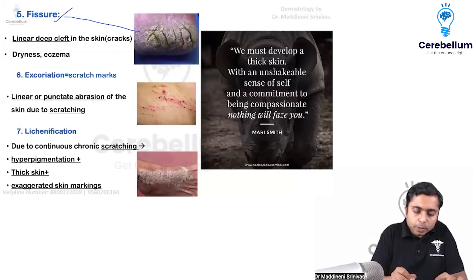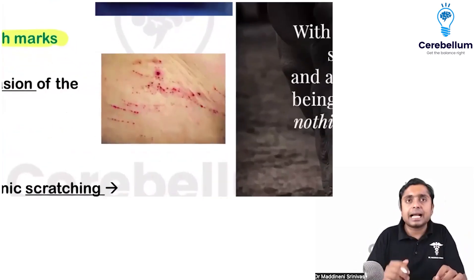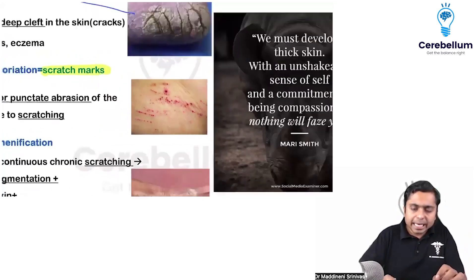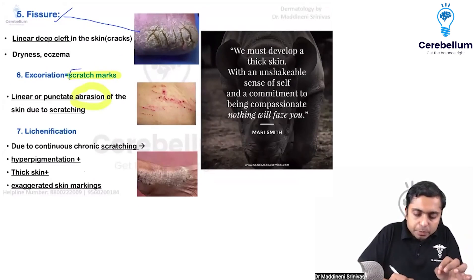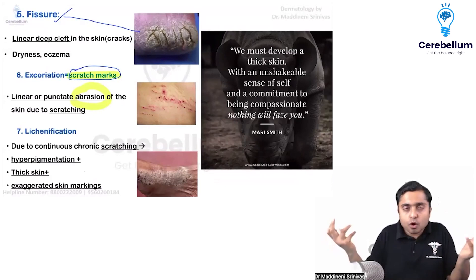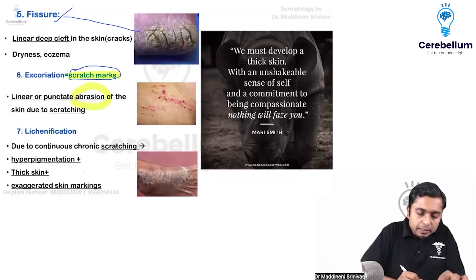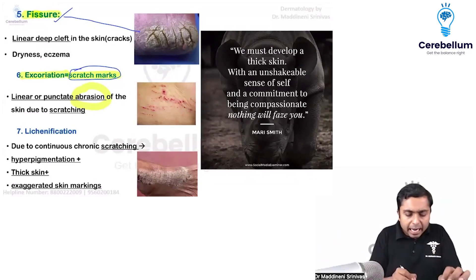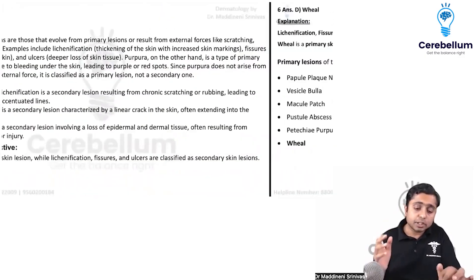One more term to remember: if a patient gets itching, they will do scratching. Scratch marks — linear or punctate lesions — will develop. These are basically abrasions, as you may have heard in forensic medicine. But in dermatology, we poshify and call them excoriation marks. This is also a secondary skin lesion. Lichenification we have already discussed in yesterday's class. These are all the secondary skin lesions you should remember.